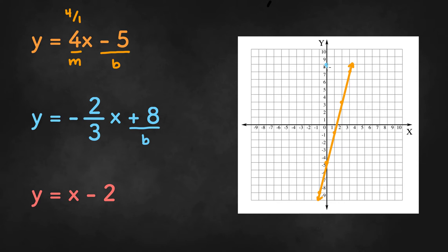So if we go down 2 and right 3 we keep plotting these points or we could go up 2 and left 3.